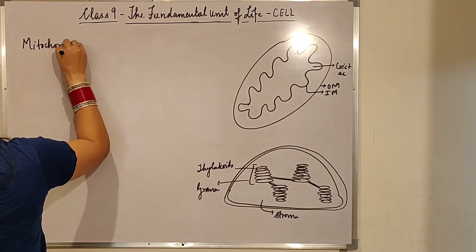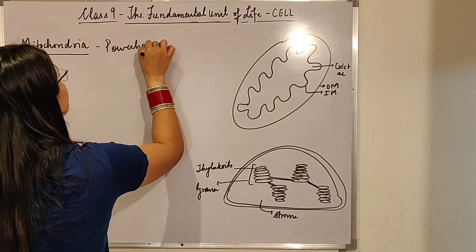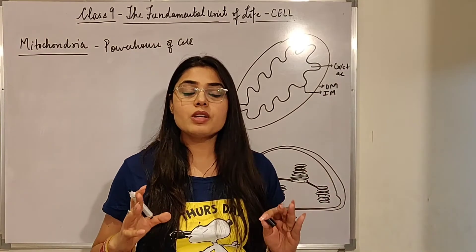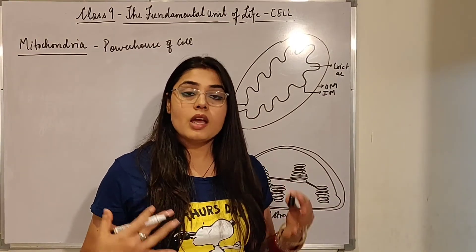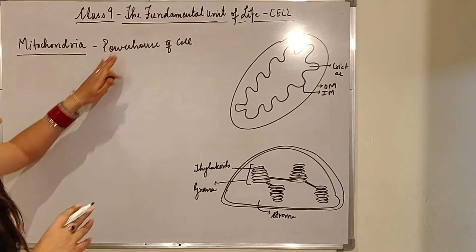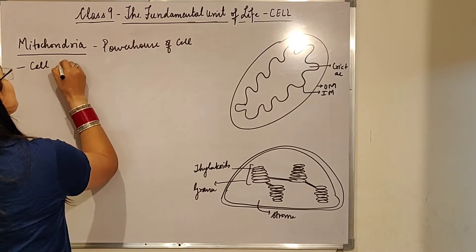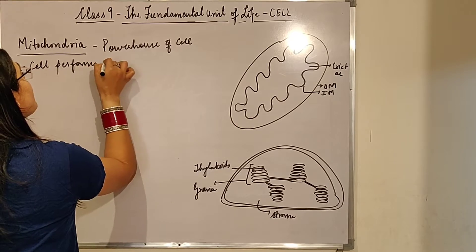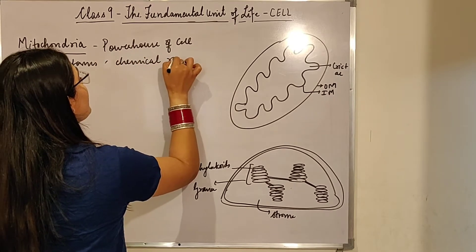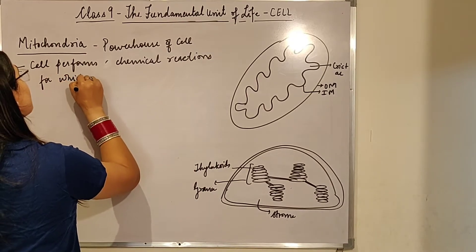The name given to mitochondria is very nice — it is known as the powerhouse of the cell. Inside the cell, all the functions being performed require energy, and who is providing that energy? Mitochondria is providing the energy. So mitochondria is known as the powerhouse of the cell. The cell performs a lot of chemical reactions for which energy is required.